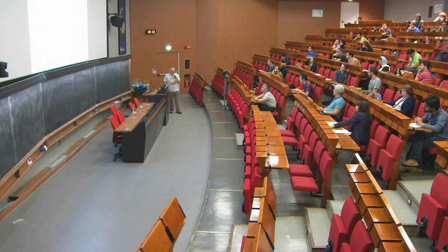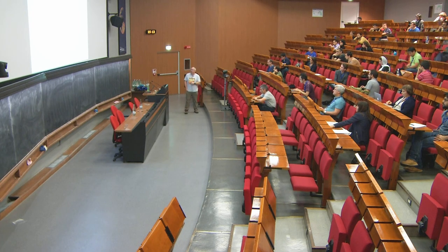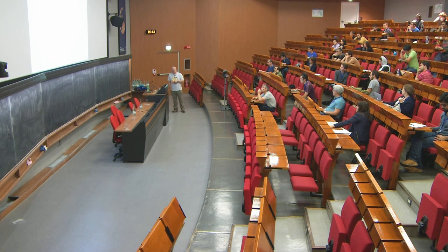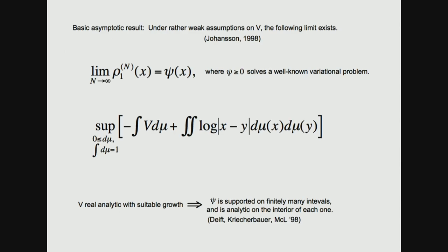The first application of orthogonal polynomial ensembles is the unitary invariant ensemble of random matrices, where matrix entries aren't independent and one uses a measure on the eigenvalues. The first thing you must do is understand the equilibrium measure. It's a well-known fact that the average density of eigenvalues converges to a function psi, the density of a probability measure solving a variational problem: maximizing a certain functional over the space of probability measures. If V is convex, the support is a single interval; if V is real analytic with suitable growth at infinity, the equilibrium measure is supported on finitely many intervals and is analytic on the interior of each.